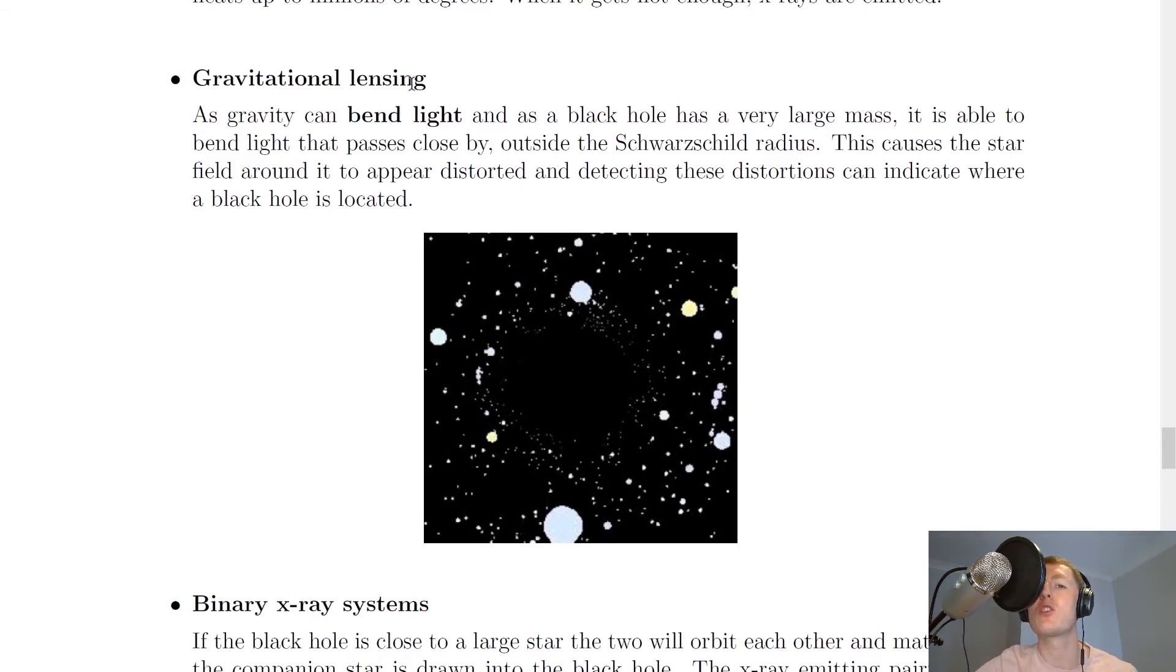The next one is gravitational lensing. As gravity can bend light and as a black hole has a very large mass, it is able to bend light that passes close by outside the Schwarzschild radius. This causes the star field around it to appear distorted, and detecting these distortions can indicate where a black hole is located. So here's a picture of the distorted star field, and you'll see you've got this circular patch of just black in the middle, and that suggests a black hole.